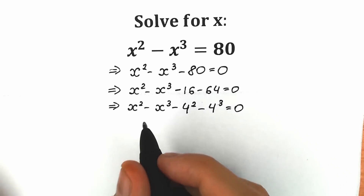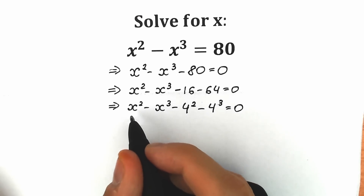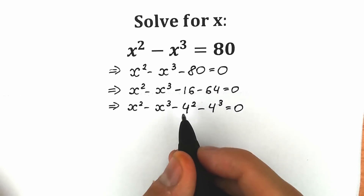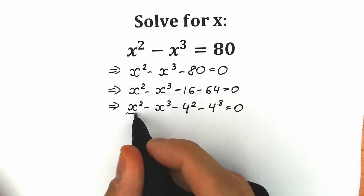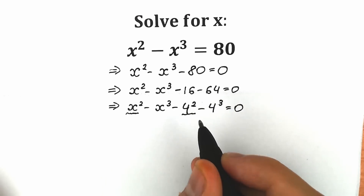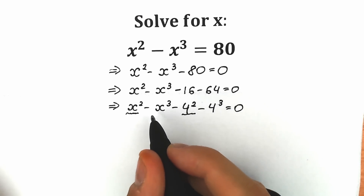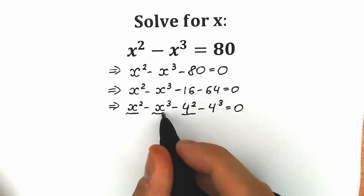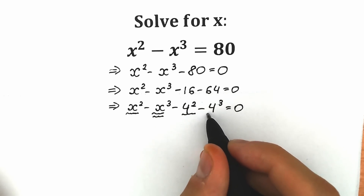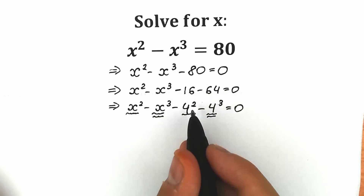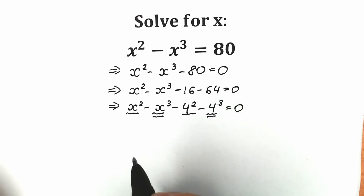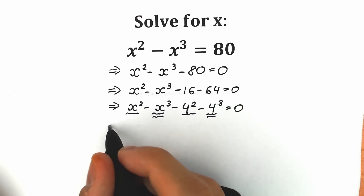If you look closely, we have four elements. Two elements — x squared and 4 squared — have the second power, and two elements — x cubed and 4 cubed — have the third power. It is really great to group these elements: the second-power terms together and the third-power terms together.